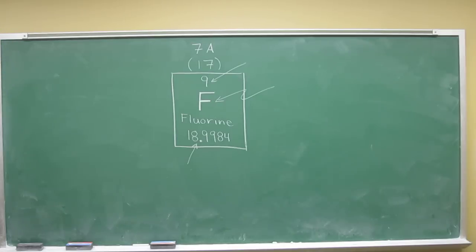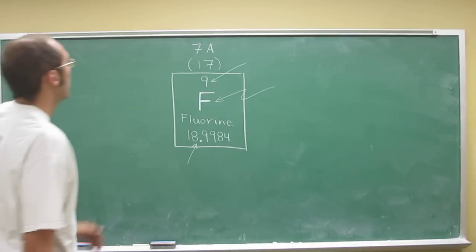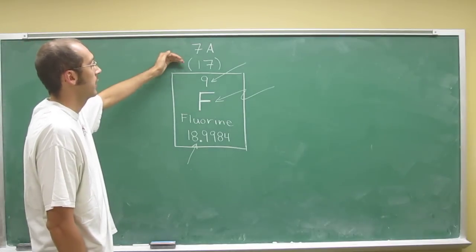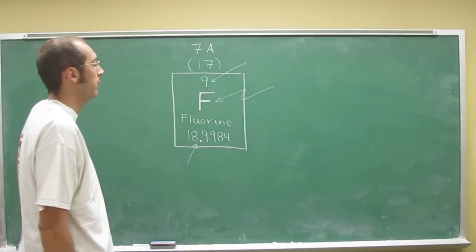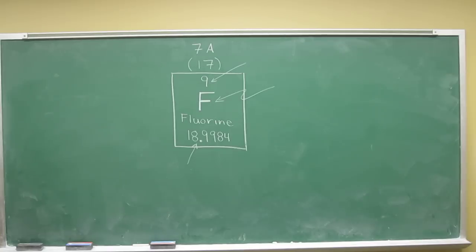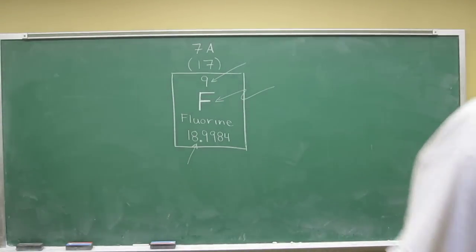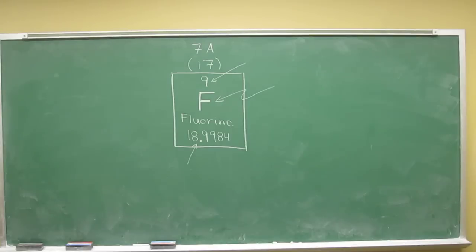What group is fluorine in? It's in either 7A or 17, and you can say either one of those. We'll do one more of these, and that should give you a pretty good idea of what's going on here.